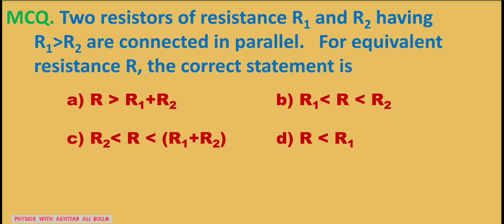Two resistors of resistance R1 and R2, having R1 less than R2, are connected in parallel. For equivalent resistance R, the correct statement is: A) R equals R1 plus R2, B) R1 less than R less than R2, C) R2 less than R less than R1 plus R2, or D) R less than R1.